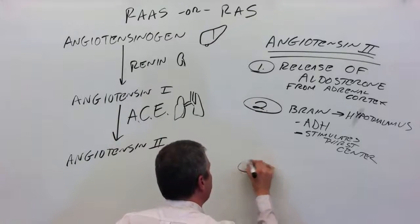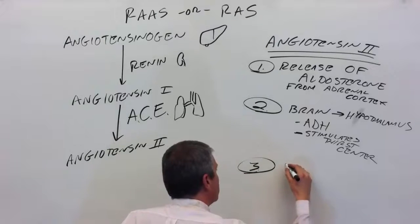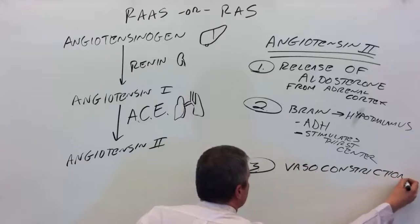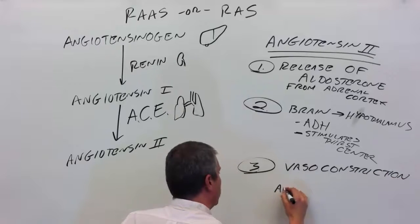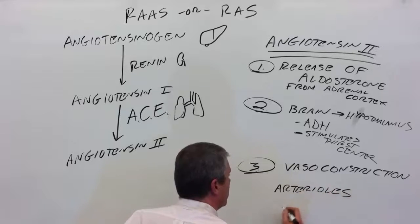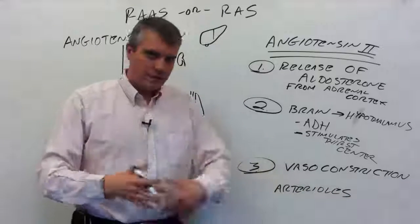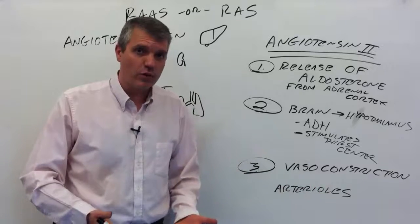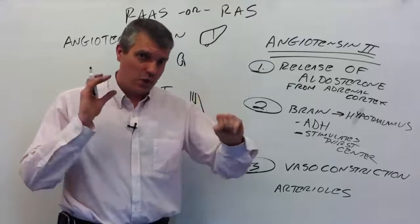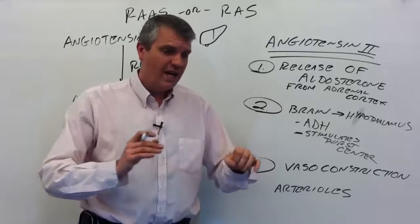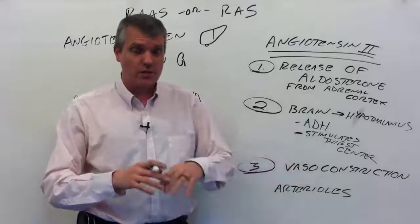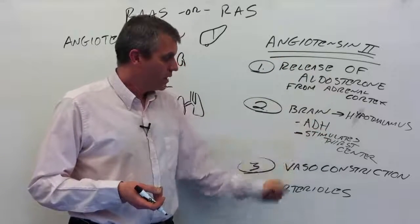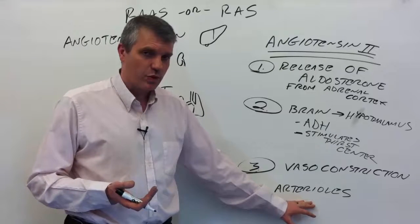Lastly, angiotensin II causes vasoconstriction, especially of arterioles, and it does this systemically. This increase in vasoconstriction causes an increase in peripheral resistance. The vessels are smaller now. You're pushing blood into a smaller hole. That's going to increase the back pressure, the peripheral resistance, so blood pressure increases. We're increasing blood volume and increasing constriction of the blood vessels, increasing peripheral resistance, and together that increases blood pressure.